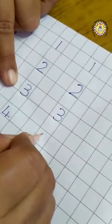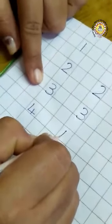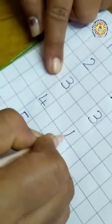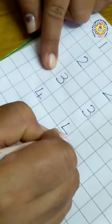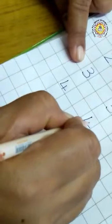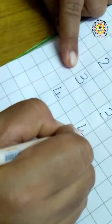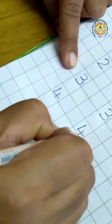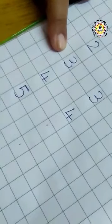4. Draw standing line. Right sleeping line. And draw standing line. Touch the bottom. 4.